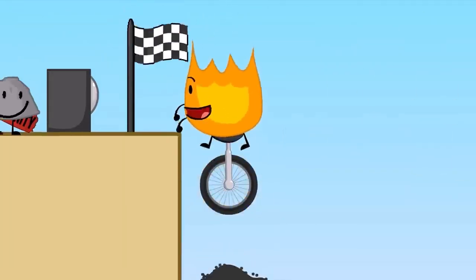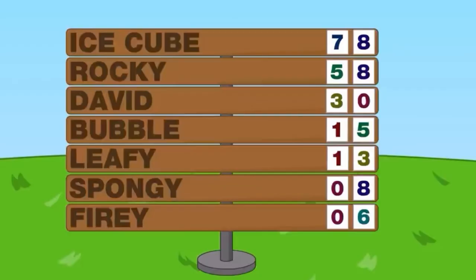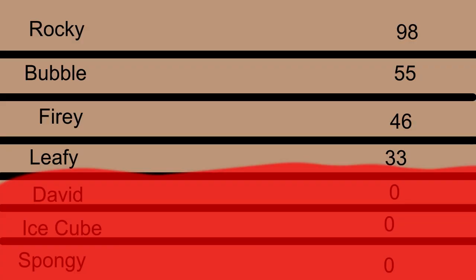After Fiery getting the final immunity, Ice Cube, David and Spongy are up for elimination. These were the points before they originally got demolished. And this is them after.